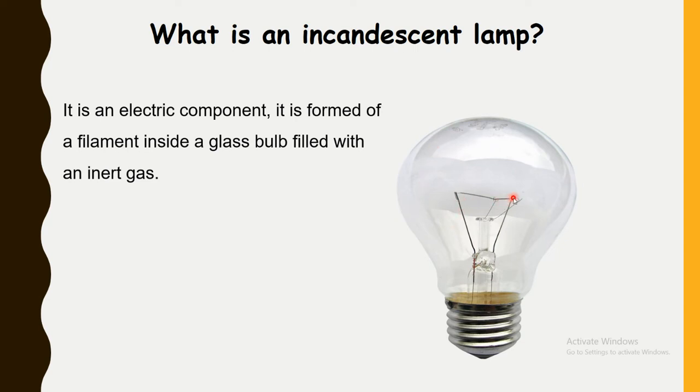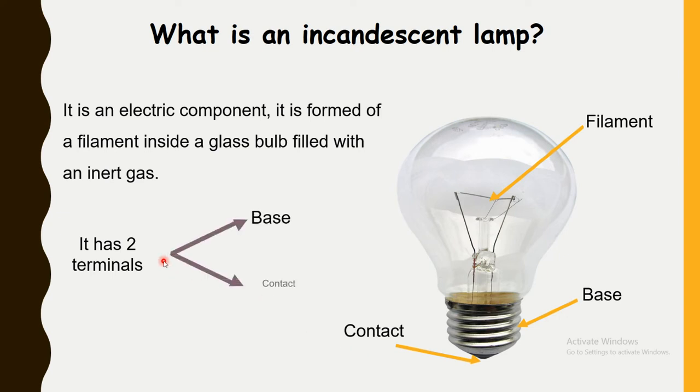The ends of the filament are connected to the terminals of the lamp. This is the filament. This end of the filament is connected to the base, the terminal of the lamp called base. And the other end of the filament is connected to the terminal of the lamp called contact. So each lamp has two terminals: base and contact.